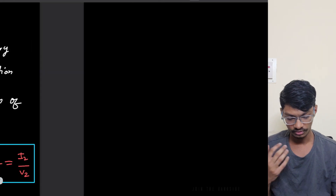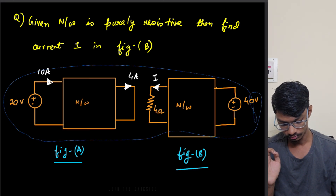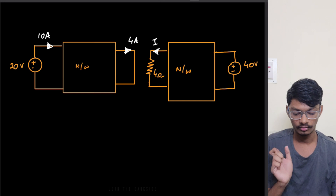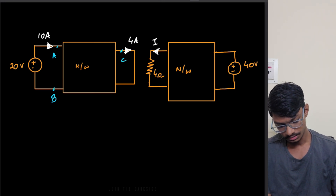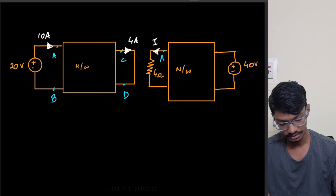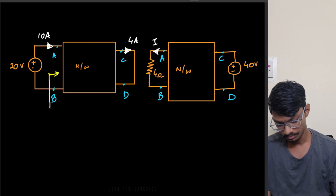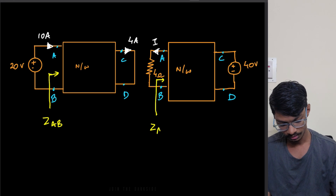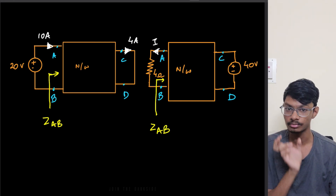So we'll use this to solve our question. First, what we need to observe is: take these two circuits. Let me name these terminals a, b, c, d — and the same terminals a, b, c, d appear in both circuits. Now I want you to think about what is the input impedance Zab seen from here, and whether it is different or the same in both circuits.